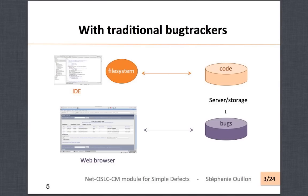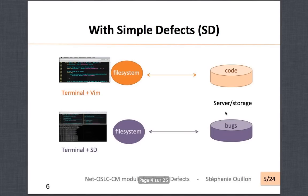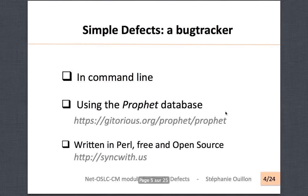With traditional bug trackers, if you want to browse through your bug tickets, you will have a web browser interface. But what if you want to use your terminal? That's possible with Simple Defects. The main idea is that Simple Defects is a bug tracker that you can use on the command line.